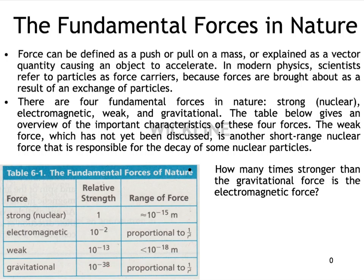The weak nuclear force is significantly weaker than the strong nuclear force and is valid only over a pretty short distance. And the gravitational force is the weakest force we know of — very, very small — and it's also proportional to one over r squared, so it's also an inverse square relationship.